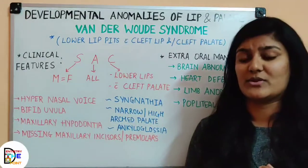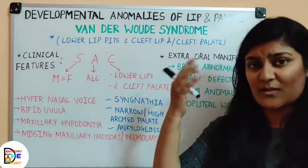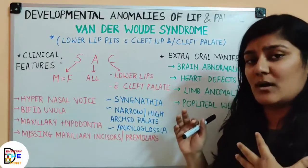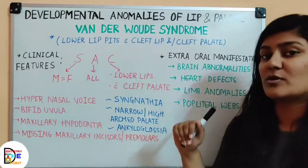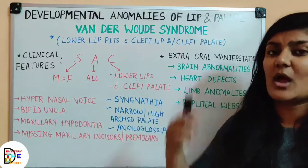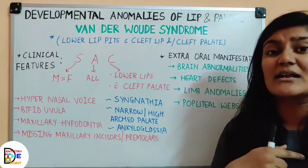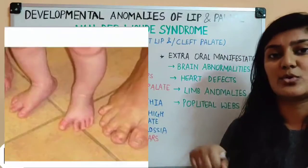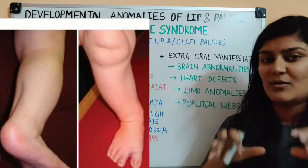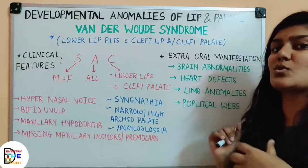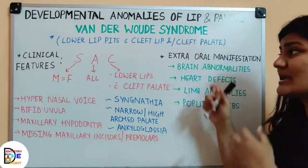Extra-oral features follow a head-to-toe pattern as you would in general medicine. These include brain anomalies, heart defects, limb anomalies, and popliteal webs — which are web-like structures in the back of the knee, similar in appearance to a frog's leg. These external manifestations are rare, occurring only in rare cases.